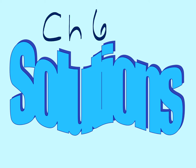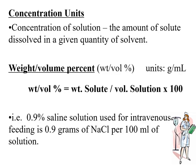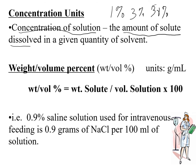Chapter 6 is about solutions. One of the characteristics of solutions is that you can make them at different concentrations — for example, a 1%, 3%, or 30% solution. The concentration of a solution is the amount of solute dissolved in a given quantity of solvent. There are three different ways we're going to learn to express concentration units.